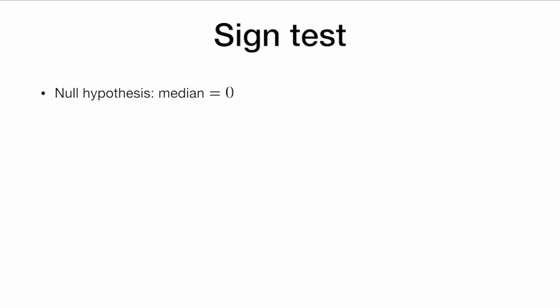Our null hypothesis, the thing we're going to start off assuming, is that the median is zero. Now, here we're using zero because we're wondering if the average is more than zero. But this could really be any value. And the alternative hypothesis here is going to be that the median is more than zero. We're asking, is the average above zero?